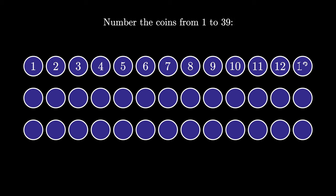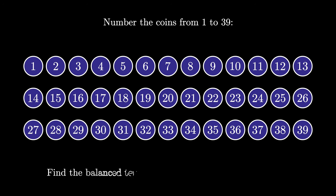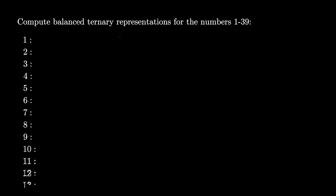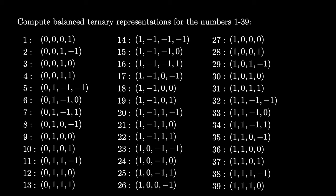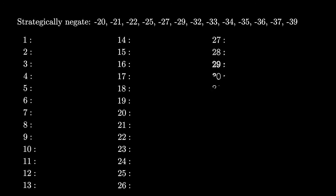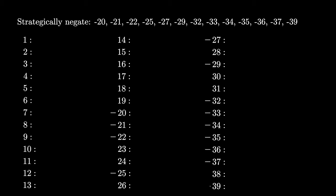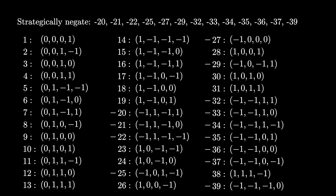With this solution in hand, the more challenging problem of 39 coins is not that much harder. We number the coins from 1 to 39, find the balanced ternary representations for each, padding with zeros so each number has exactly four digits. In the 1's position there are 13 numbers using each digit of 1, negative 1, and 0. Unfortunately this balance doesn't hold in the other three positions — the 3's, 9's, and 27's — but similarly to before, we can strategically negate 13 values to achieve a perfect balance: 13 numbers in each position with a digit of 1, 0, and negative 1.